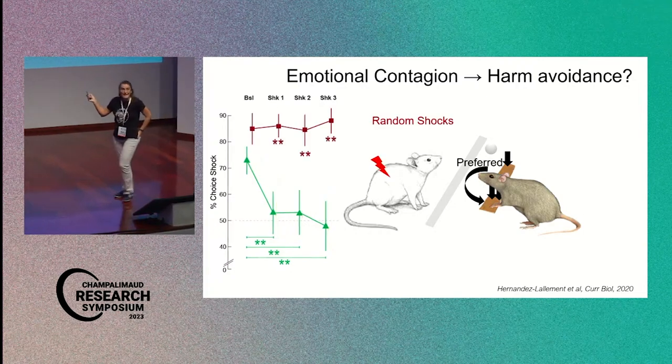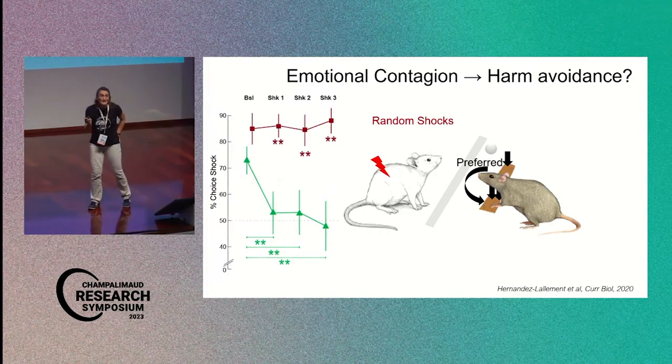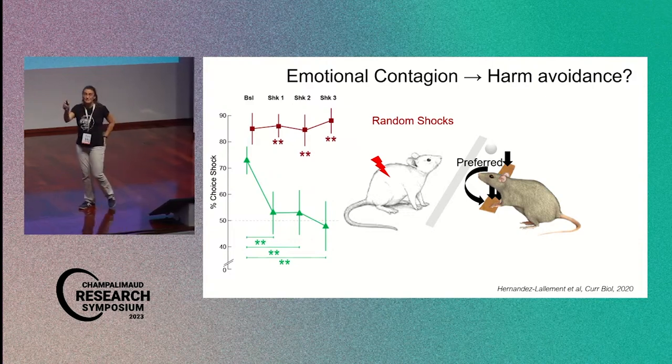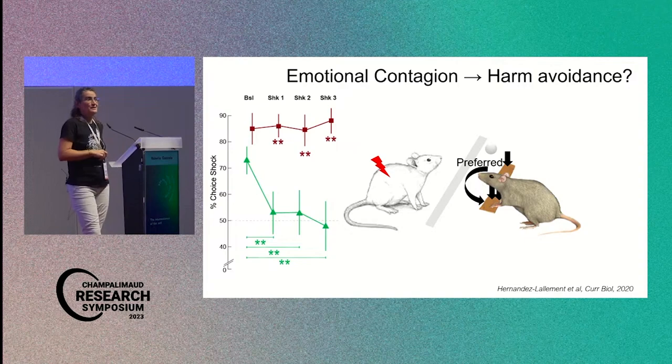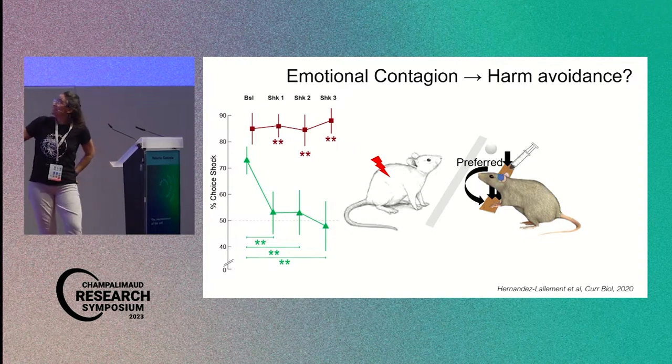But now, if I play the shock randomly, so that the shock is not a consequence of the animal pressing the lever, then this switch does not occur anymore.